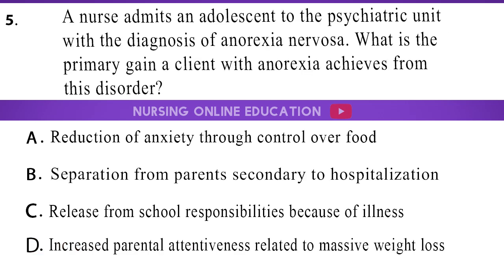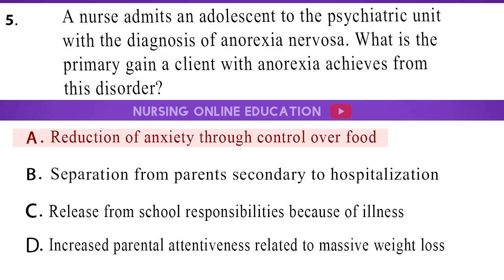Question 5. A nurse admits an adolescent to the psychiatric unit with the diagnosis of anorexia nervosa. What is the primary gain a client with anorexia achieves from this disorder? A. Reduction of anxiety through control over food. B. Separation from parents secondary to hospitalization. C. Release from school responsibilities because of illness. D. Increased parental attentiveness related to massive weight loss. The answer is option A: Reduction of anxiety through control over food.